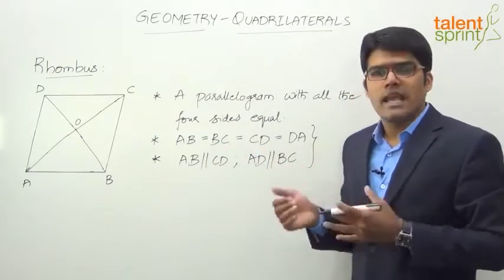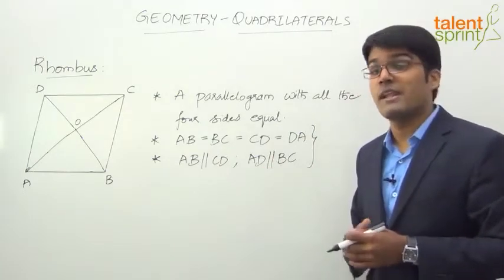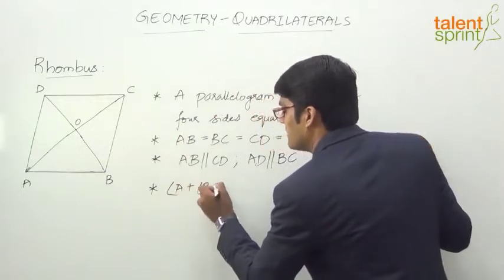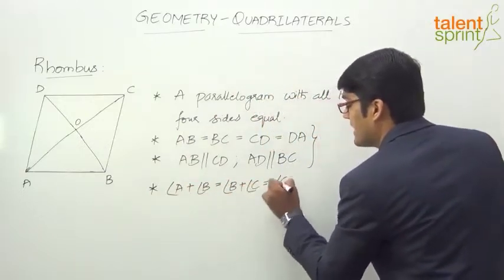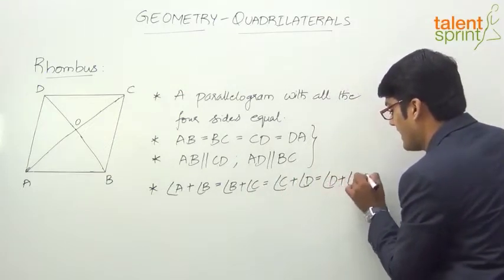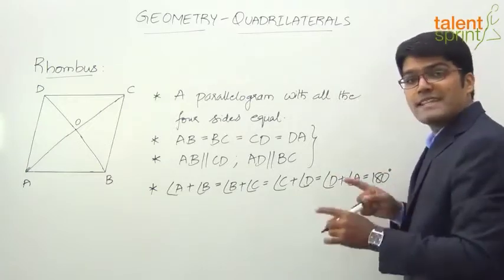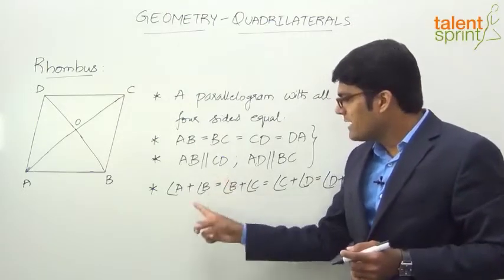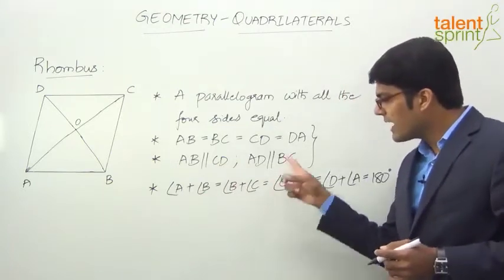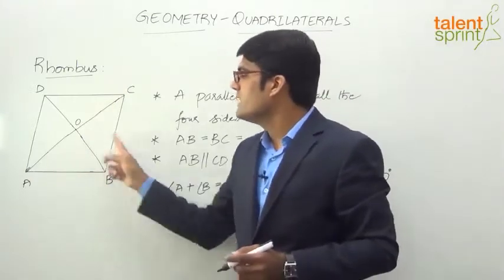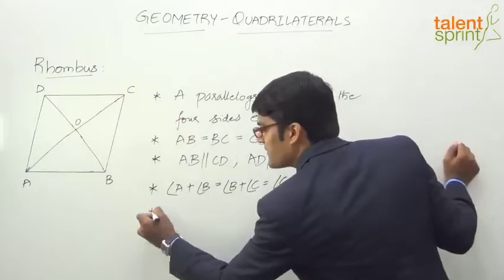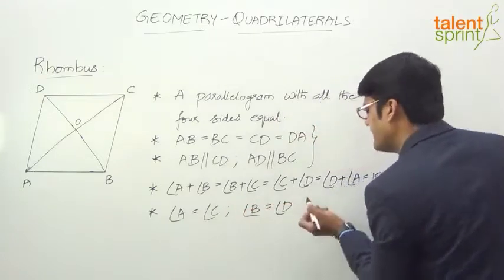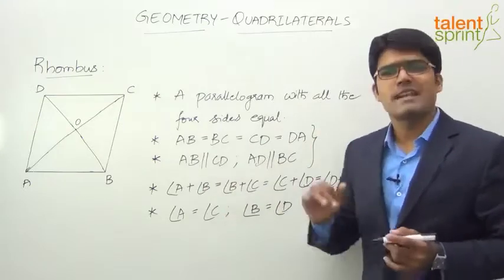What about angles? Angles behave as in parallelograms. Adjacent angles add up to 180 degrees. So here also, adjacent angles add up to 180 degrees: angle A plus angle B equals angle B plus angle C, equals angle C plus angle D, equals angle D plus angle A, and all equal 180. Since this is true, the opposite angles are equal. Angle B and angle B cancel, giving angle A equals angle C. Angle C and angle C cancel, giving angle B equals angle D. So in a rhombus, angle A equals angle C and angle B equals angle D.